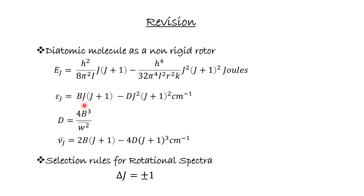We have seen that the bond length will not change during rotation — that was just an approximation. But in actual estimations, rotation does have some effect on the bond length, and because of this effect on bond length, there is a change in the moment of inertia and other parameters as well. We have seen the equation for energy at the J energy level: E_J = h²/(8π²I) · J(J+1). This was the same as for a rigid rotor.